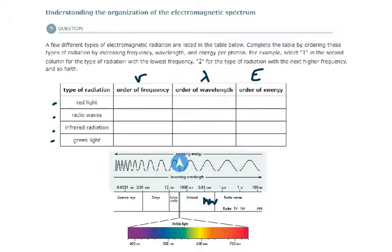So our higher energy radiations are to the left of this figure. So which type of radiation is furthest left is the question. Red light, radio waves, infrared, or green light? And the answer is going to be green light. So green light is our highest energy. So it would be four highest.